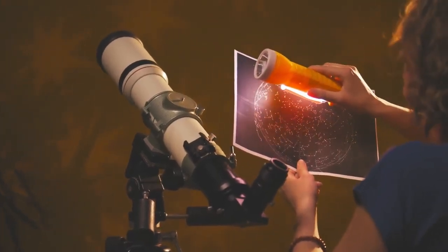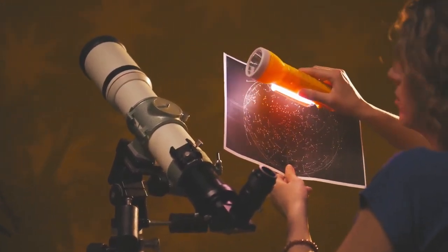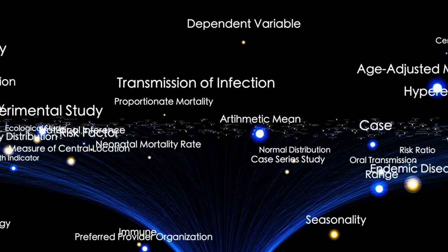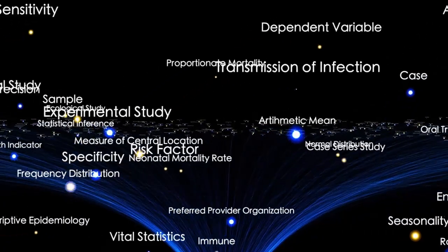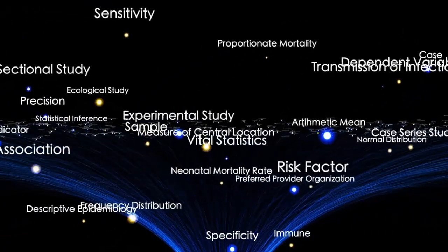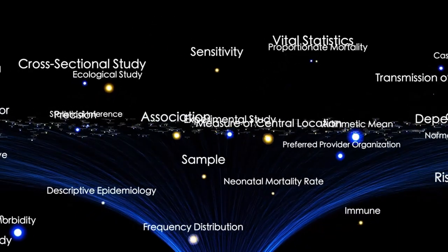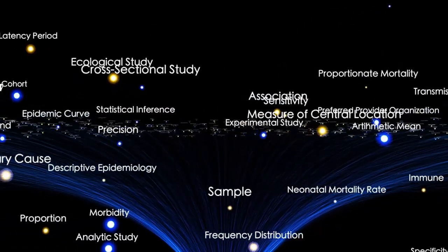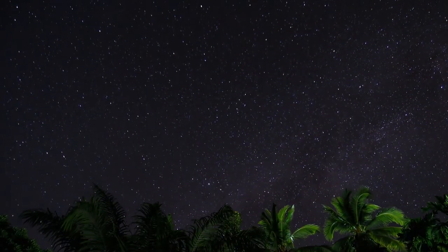It crossed the heliosphere, that protected bubble shielding our planetary system from interstellar radiation. Many believed the probe would go quiet beyond this threshold, or that its readings would become irrelevant.